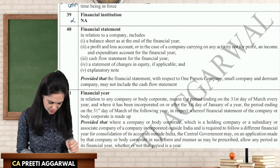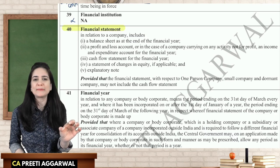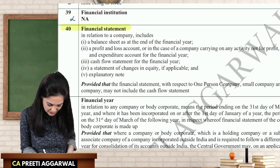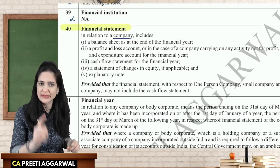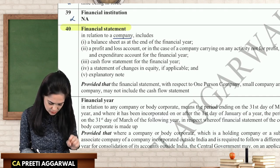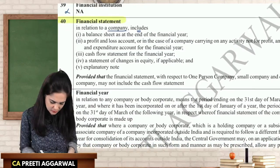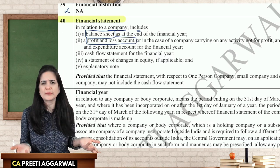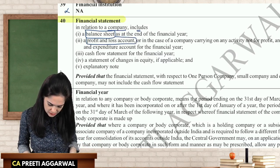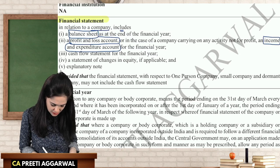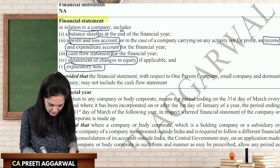Financial statement, in relation to a company, is an inclusive definition. It includes: balance sheet, profit and loss account (or income and expenditure account in case of a non-profit organization), cash flow statement, statement of changes in equity, and explanatory notes.